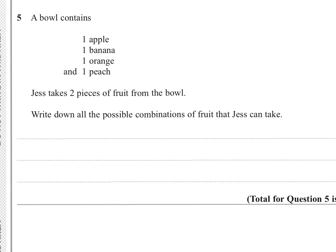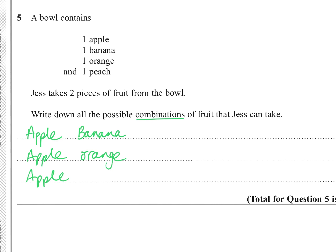Question five: a bowl contains one apple, one banana, one orange, and one peach. Two pieces of fruit are taken. Write down all possible combinations. Combinations means order doesn't matter — apple and banana is the same as banana and apple. Starting with apple: apple-banana, apple-orange, apple-peach.